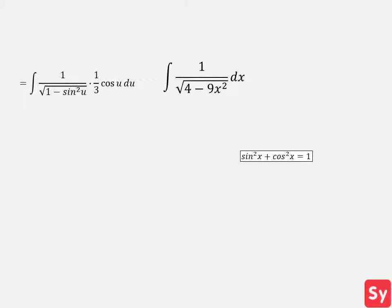Remember, sine squared plus cosine squared equals 1. So we substitute cosine squared u for 1 minus sine squared u. This integrand now simplifies to 1 third du because we can cancel out cosine of u.